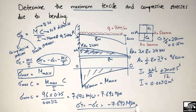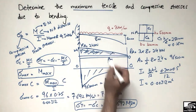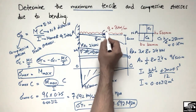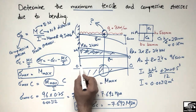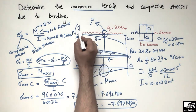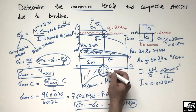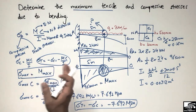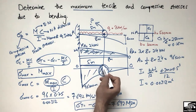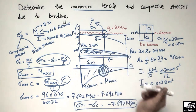So the maximum compressive and tensile stresses in this cantilever beam are ±7.692 MPa, corresponding to the maximum bending moment. You can find tensile and compressive stresses at any point in the beam — for example, at 5 meters from the left end — by calculating the bending moment at that point, then substituting M, c, and I into the formula. This method applies to every type of beam, whether cantilever or simply supported.